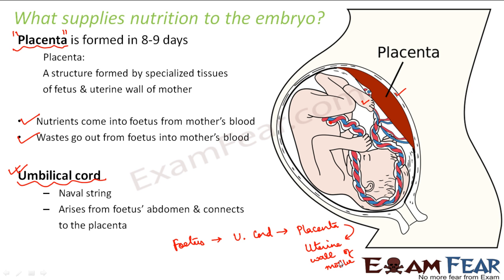This is how an embryo gets implanted in the uterus of a female and receives nutrition. In human beings, the placenta is a flat, round structure. This was about how a baby gets implanted.